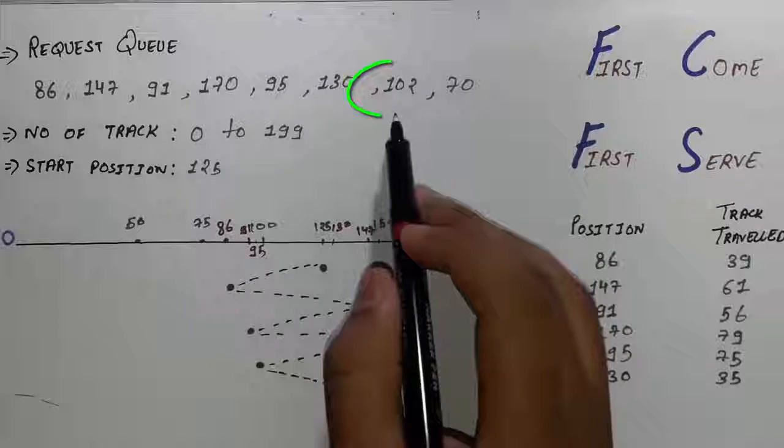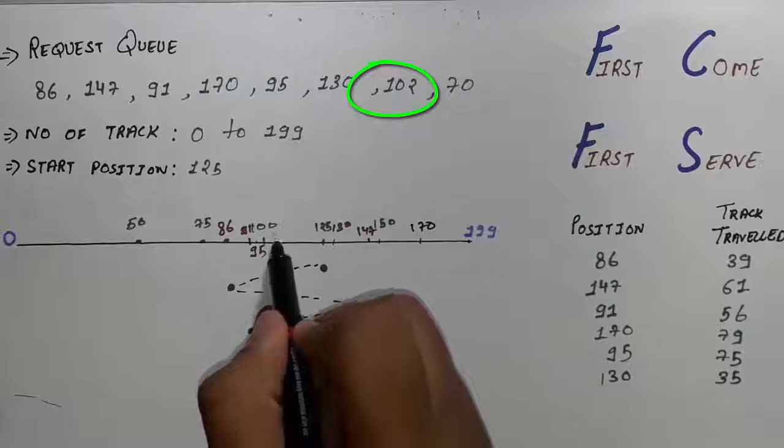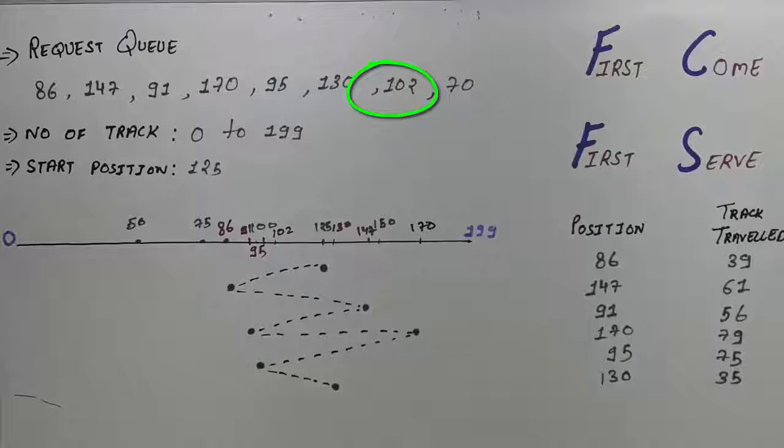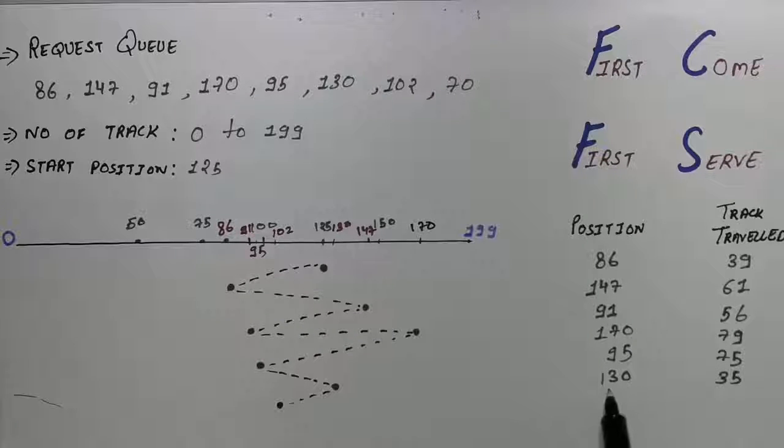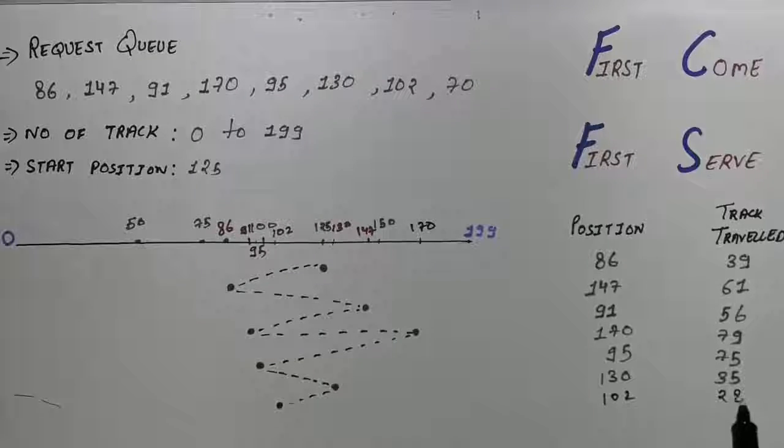Now in the question you can see the next number is 102. So we have to move somewhere here. So 102 and the header will be here. So we have to move to 102 which is here. Draw the line and do the subtraction. So from 130 to 102 the difference will be 28.